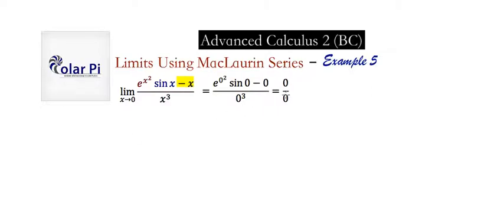That means that we can use L'Hôpital's rule, but L'Hôpital's rule would tell us to take the limit as x goes to zero of the derivative of the numerator divided by the derivative of the denominator. But we don't want to take the derivative of the numerator — look, it will require a product rule. So we're not going to use L'Hôpital's rule.